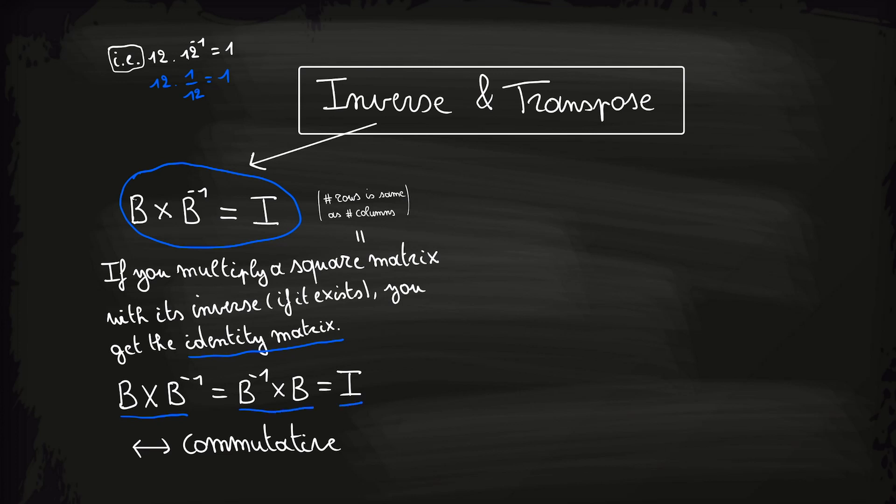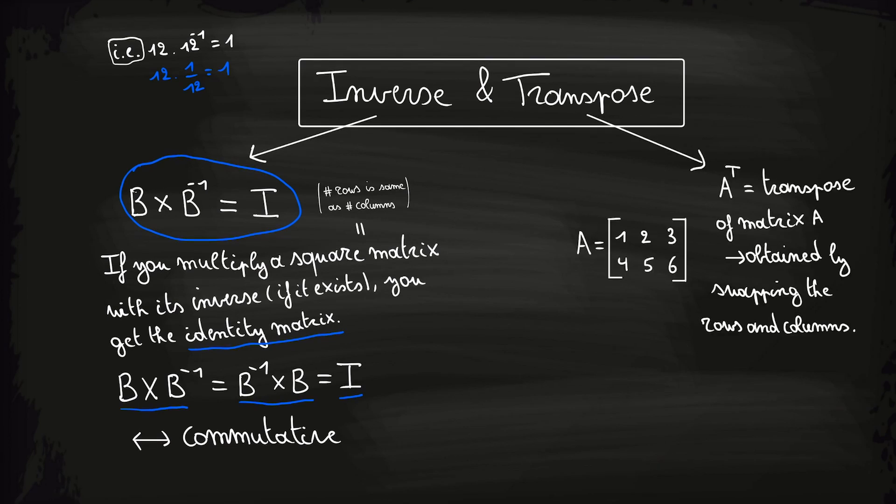Matrices that don't have an inverse are called singular or degenerate. On the other hand, we can also look to the transpose of a matrix. The transpose of a matrix is denoted by subscript T and is obtained by swapping the rows and columns of a matrix. For example, if we look at this matrix called A, then the transpose of this matrix is obtained by switching the rows and columns of the matrix. Or in other words, a subscript i,j is equal to a superscript T subscript j,i.